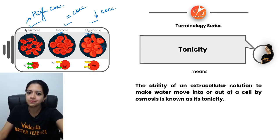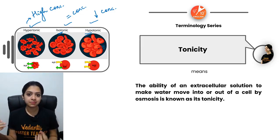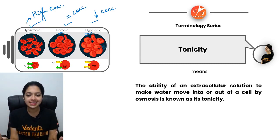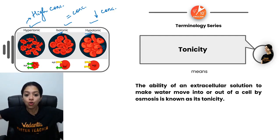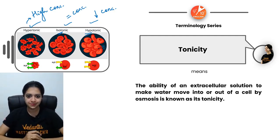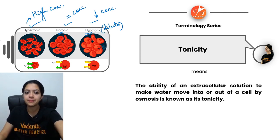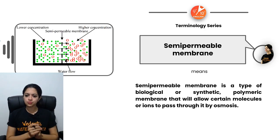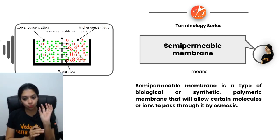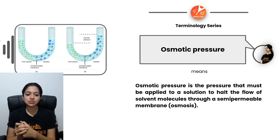In a hypotonic solution, the concentration outside the cell is lower than inside, so it's basically a dilute solution — water enters the cells by endosmosis. In a hypertonic solution, it's highly concentrated. A semi-permeable membrane is a type of membrane which allows certain molecules or ions — normally solvent or fluid molecules — to pass through during osmosis.